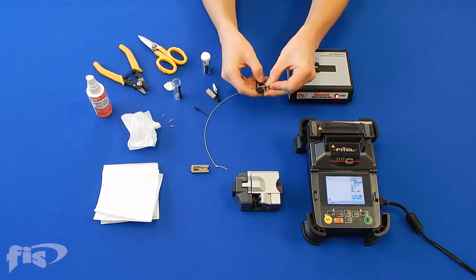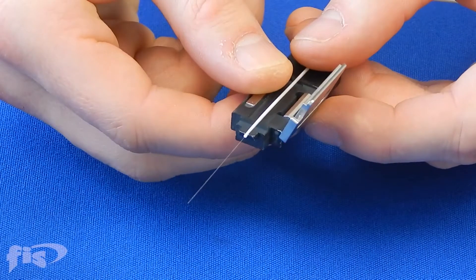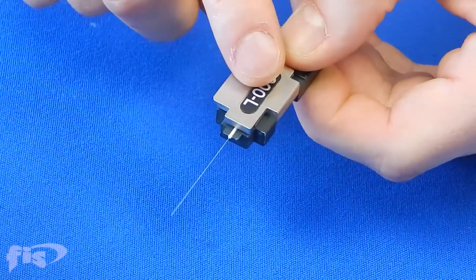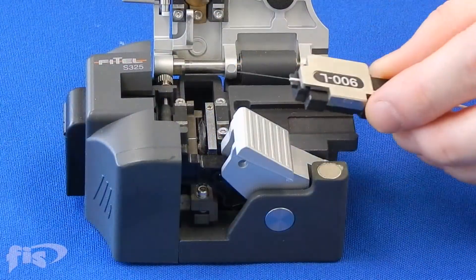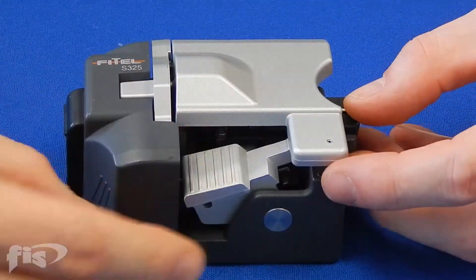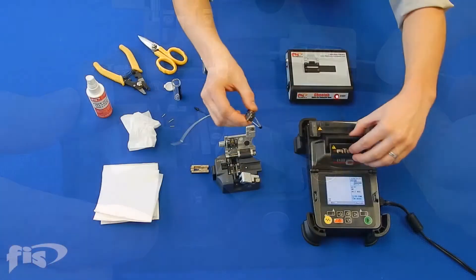Place the field fiber in the splicer's removable 900 micron holder. Be sure to place the buffer to the end of the holder to ensure the proper cleave length of 10 millimeters. Cleave the fiber and place on the left side of the machine.